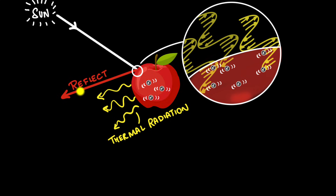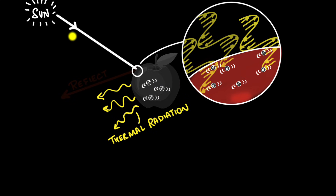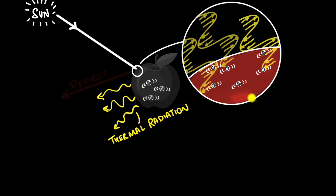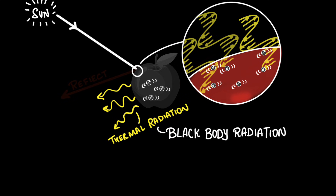But reflected light is a problem, so I only want to analyze objects that do not reflect any light — black objects. If I paint this apple black, the reason it looks black is because it's not reflecting any light; it absorbs all the light incident on it. Now, a real black object does reflect a tiny bit, but if it were ideally perfectly black it wouldn't reflect anything, and then the only light I could get from it would be thermal radiation. That's why we love to analyze black bodies — they only give thermal radiation, and so this radiation is called black body radiation.